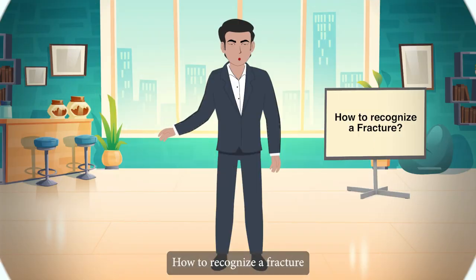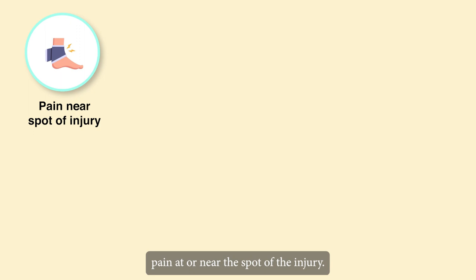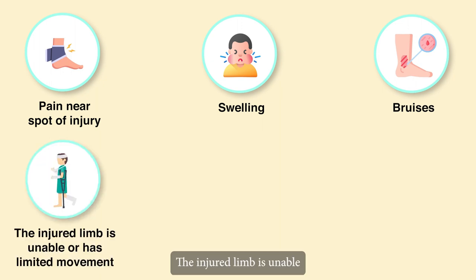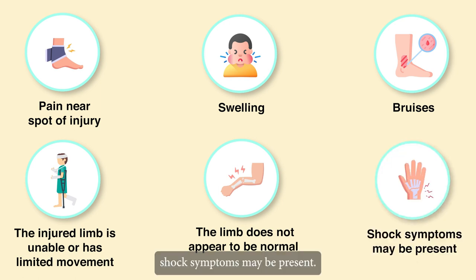How to recognize a fracture? Signs include pain at or near the spot of the injury, swelling, and bruising. The injured limb is unable to move or has limited movement, and the limb does not appear normal — you can compare it with the other limb. Shock symptoms may also be present.